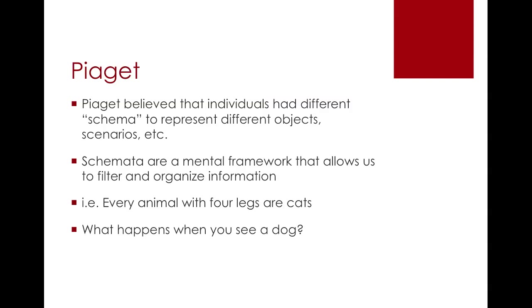When we first come across new knowledge, we do not have a schema that fits it. For example, a child might believe that all furry objects with four legs are cats, because this is what they have at home. So what happens when they meet a dog for the first time? There are many differences between dogs and cats that disrupts the person's previous schema.